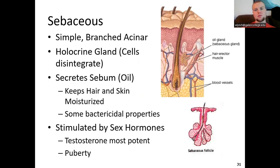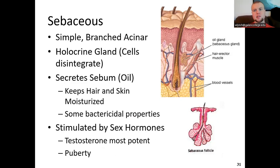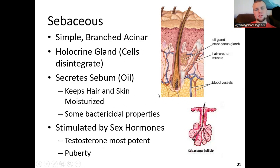Sebaceous glands secrete sebum — the body's oil. Their structure is a simple branched acinar gland with several branches. They form holocrine secretions, meaning the cells inside disintegrate and pass through the lumen into the hair follicle and out, directly associated with hair follicles. This keeps hair and skin moisturized and has some bactericidal properties. Oil secretion is stimulated largely by hormones like testosterone, which is why oil secretion is typically high during puberty, contributing to episodes of acne from increased pore clogging.